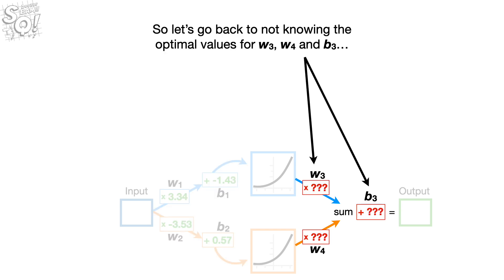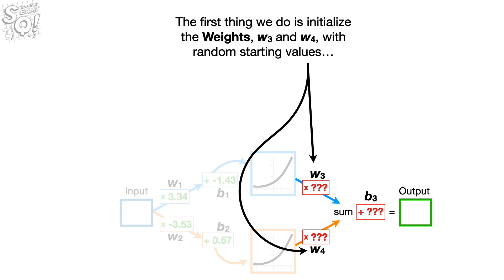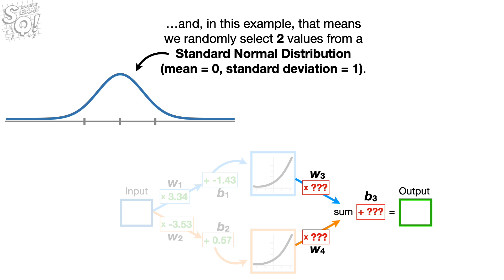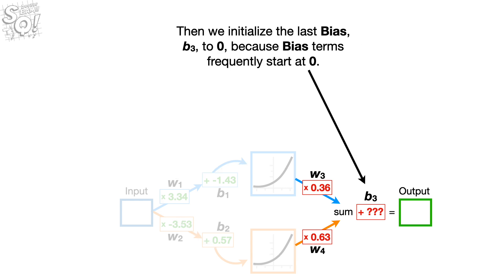So let's go back to not knowing the optimal values for W sub 3, W sub 4, and B sub 3, and assume that the other weights and biases are already optimized. The first thing we do is initialize the weights W sub 3 and W sub 4 with random starting values — in this example, we randomly select two values from a standard normal distribution. Then we initialize the last bias, B sub 3, to 0, because bias terms frequently start at 0.